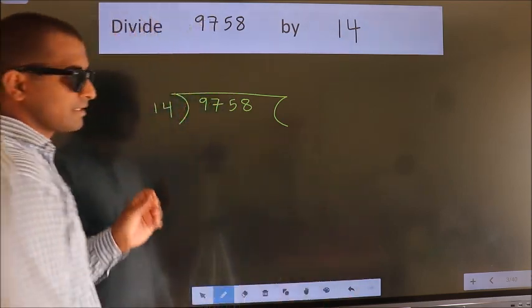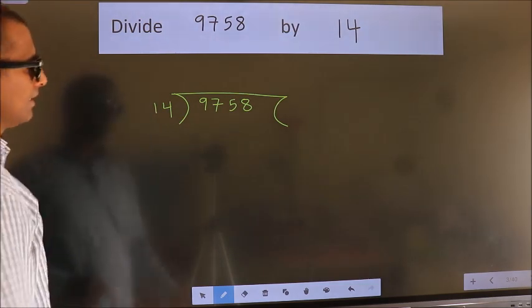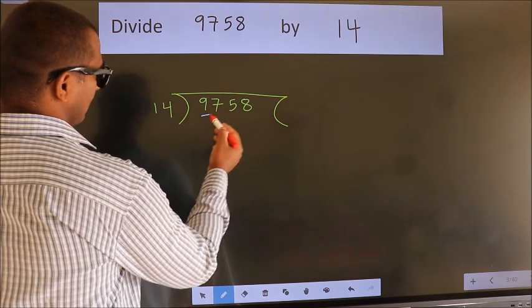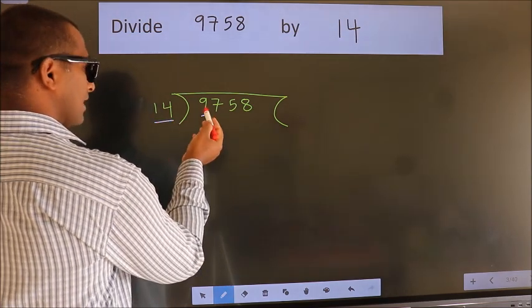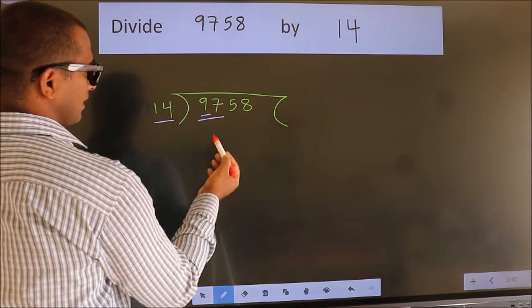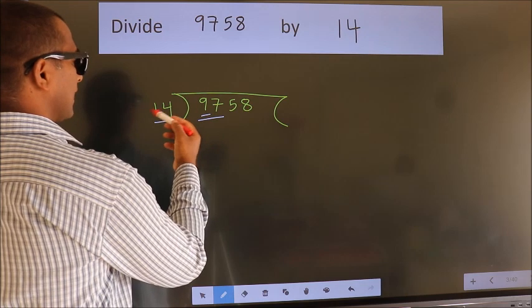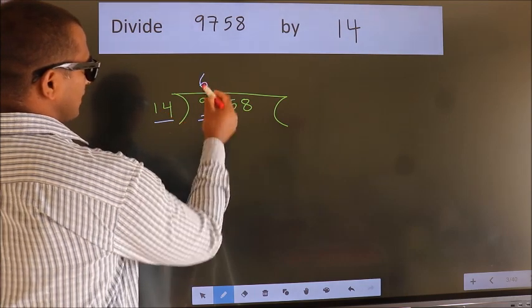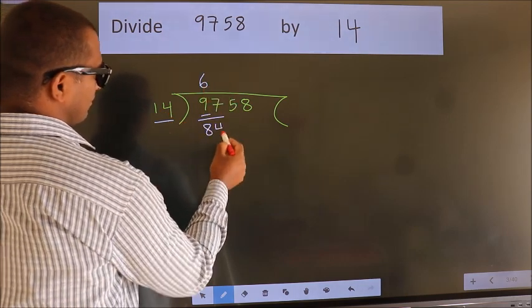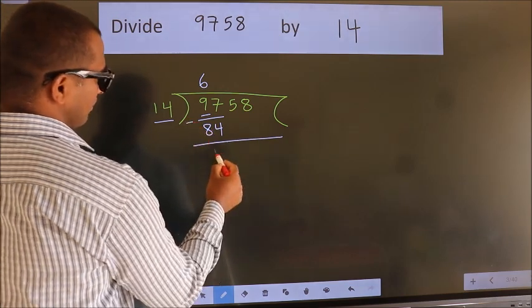This is your step 1. Next, here we have 9. Here 14. 9 is smaller than 14, so we should take two numbers, 97. A number close to 97 in the 14 table is 14 times 6 equals 84. Now we should subtract. We get 13.